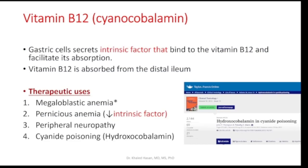Moving to cyanocobalamin — gastric cells produce a substance called intrinsic factor, which is very important to bind to B12 and facilitate absorption. When B12 arrives in the GI system with food, gastric cells produce intrinsic factors that bind to B12 and facilitate its absorption.